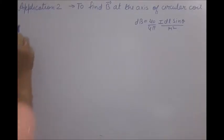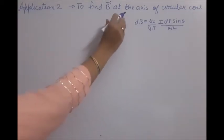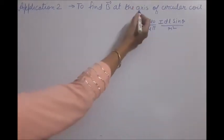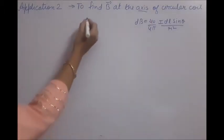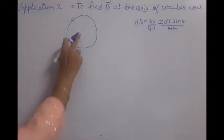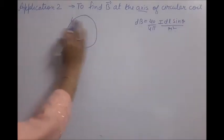Good morning students. Let us start application number two of the Biot-Savart law. In this, we have to find the magnetic field B at the axis of a circular coil. Now firstly, let us understand the meaning of axis. A circular coil is one in which current is flowing. The axis is the line which passes through the center of the coil and is perpendicular to the plane of the coil.